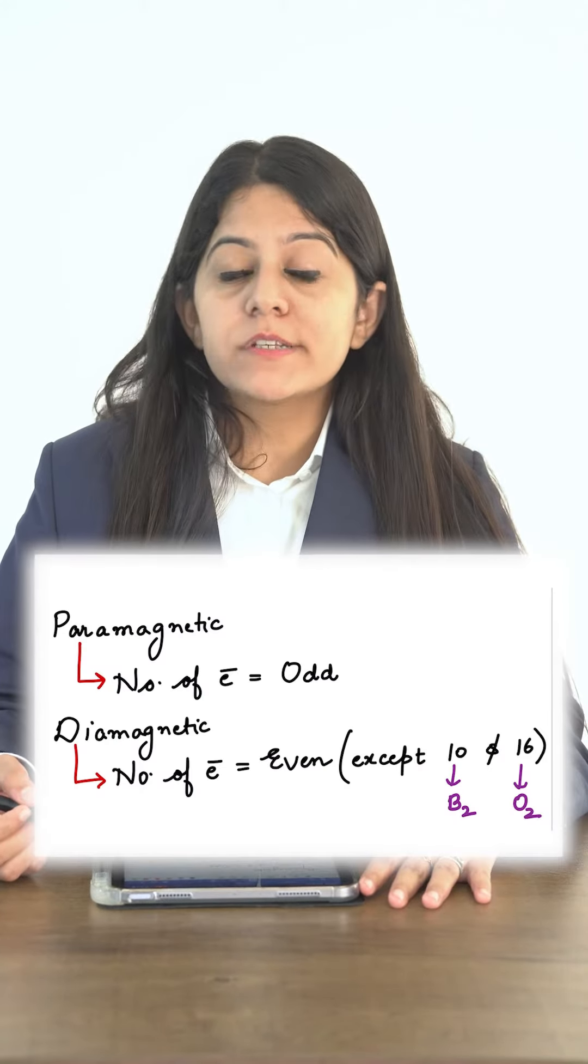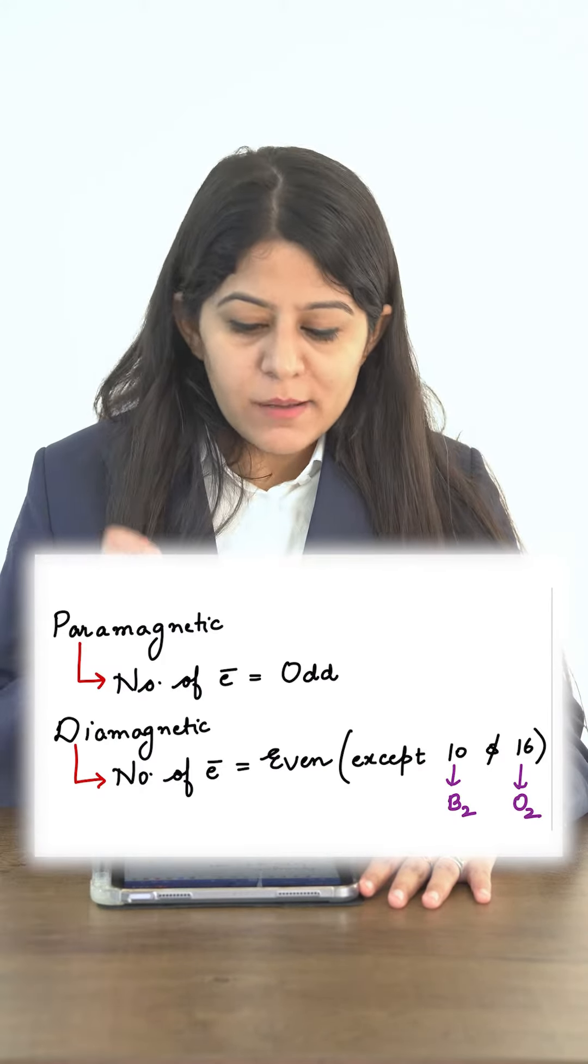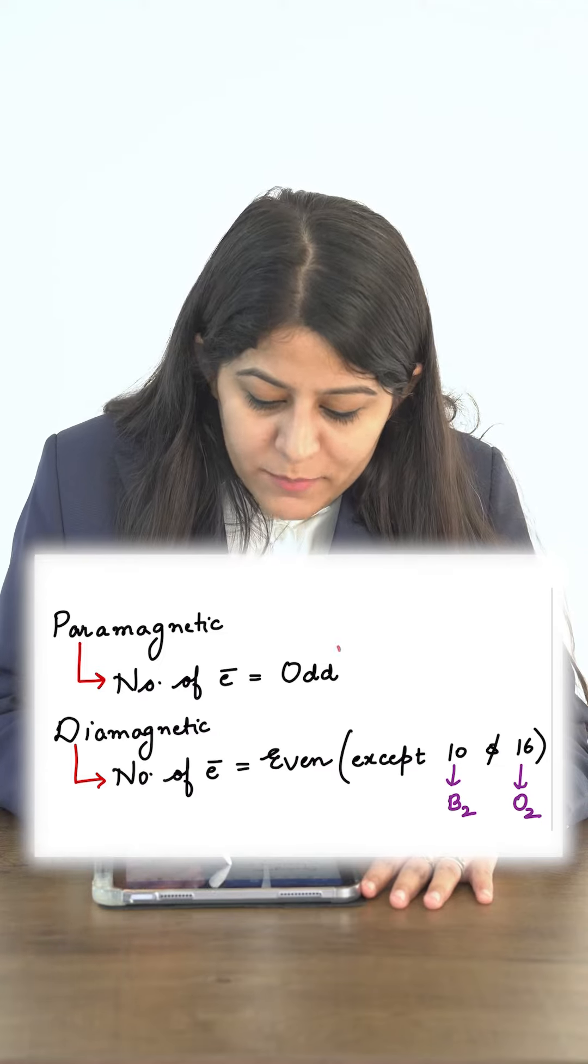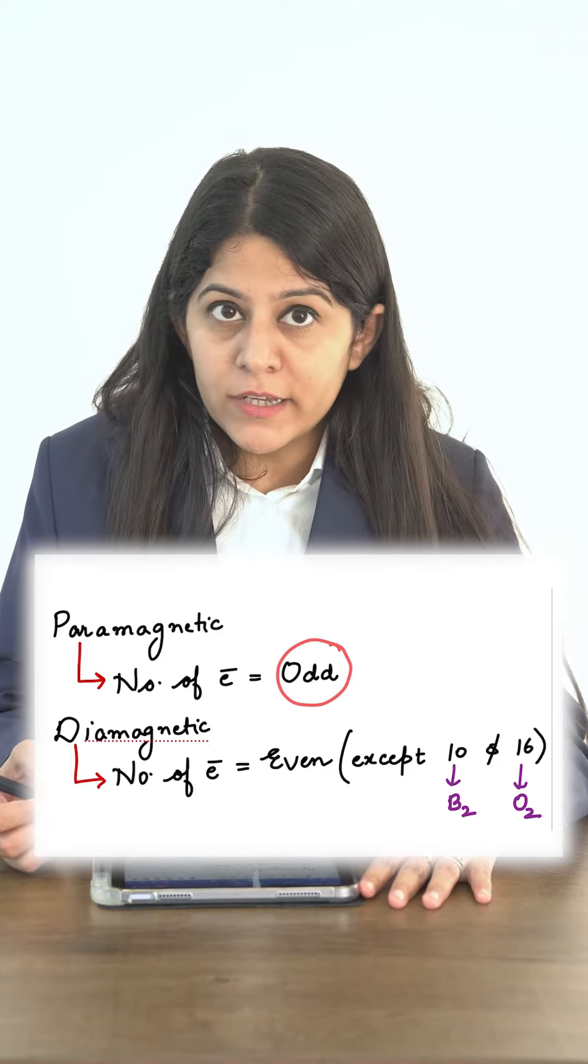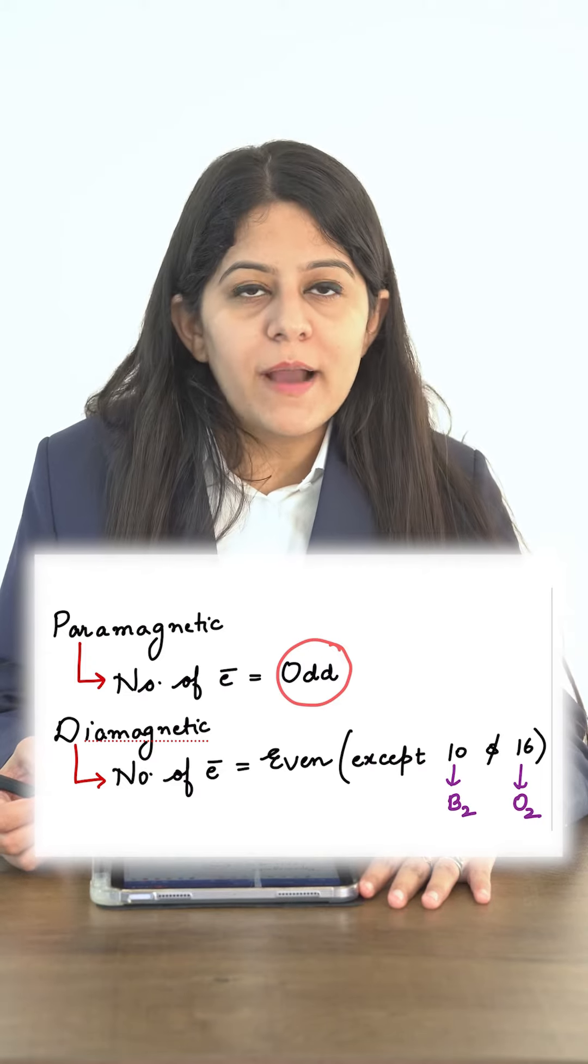What you have to do is just find the number of electrons. If the number of electrons is odd, that particular species is paramagnetic. But if the number of electrons is even, that particular species is diamagnetic.